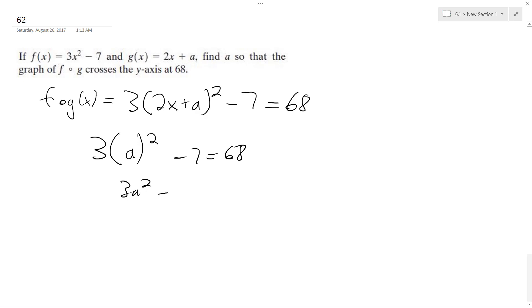So three a squared is equal to, and then 68 plus seven is going to be equal to 75 divided by three. A squared is equal to 25, and then a is equal to plus or minus five.